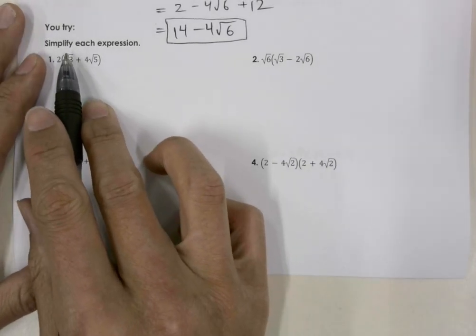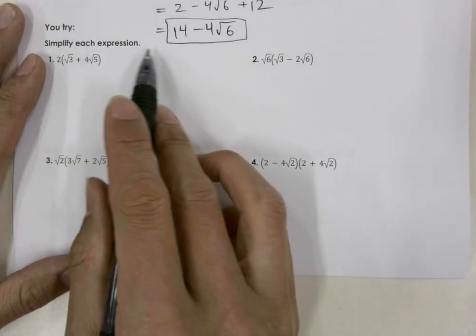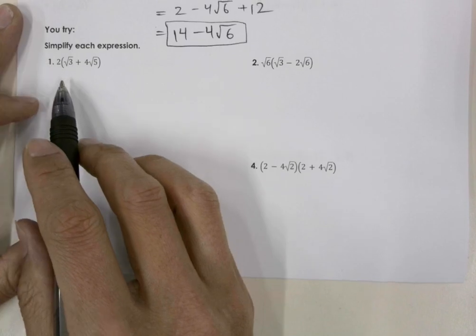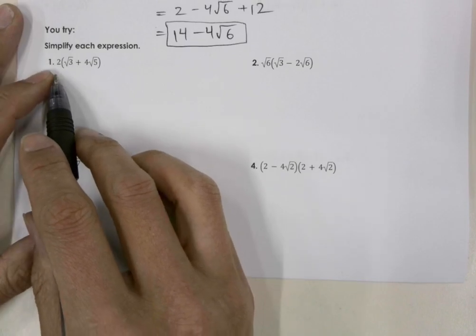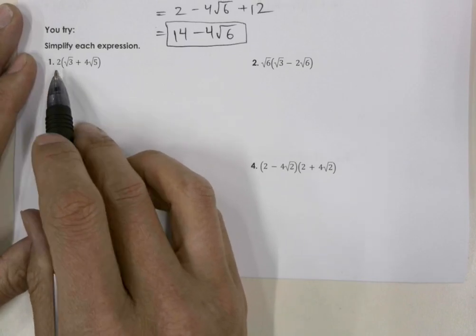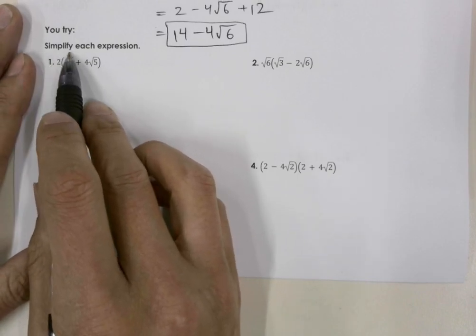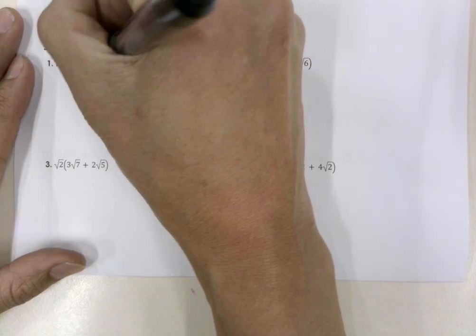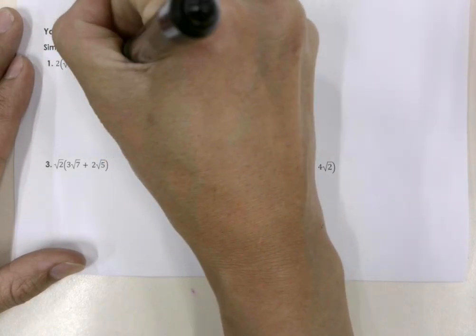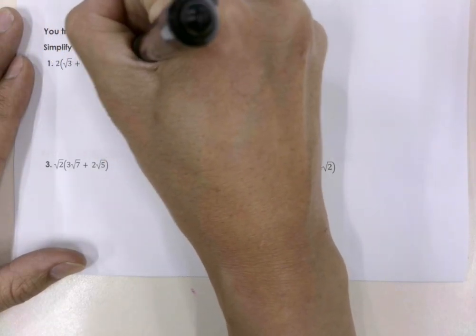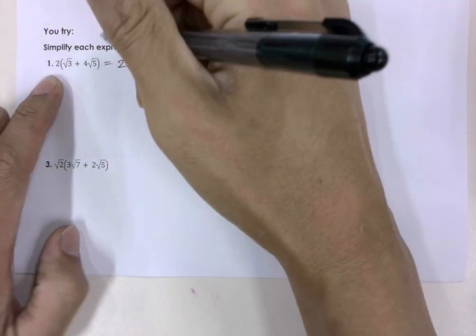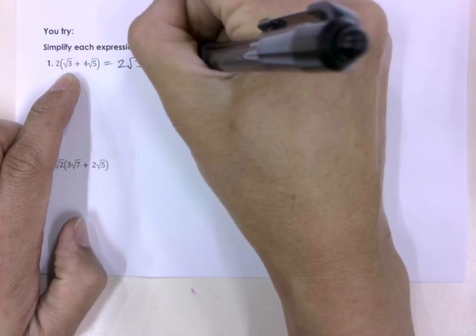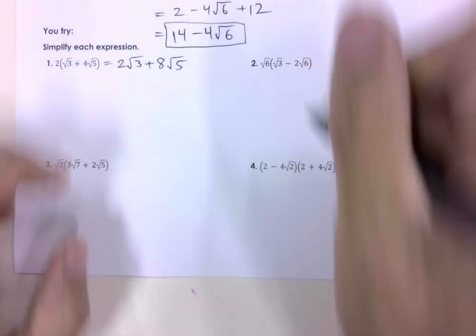We have a task to simplify each expression. For the first one, we need to distribute out the 2. So what we get is 2 times square root 3, and then we get plus 8 times square root 5.